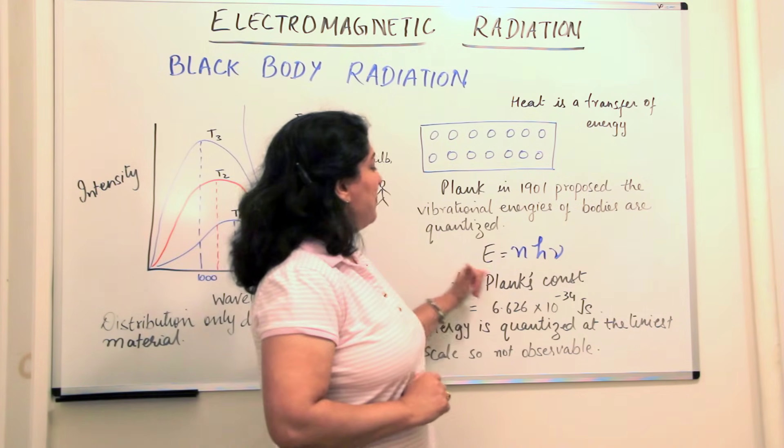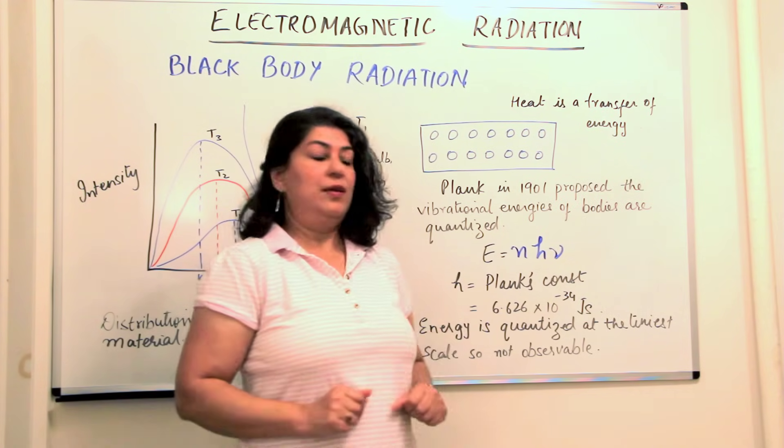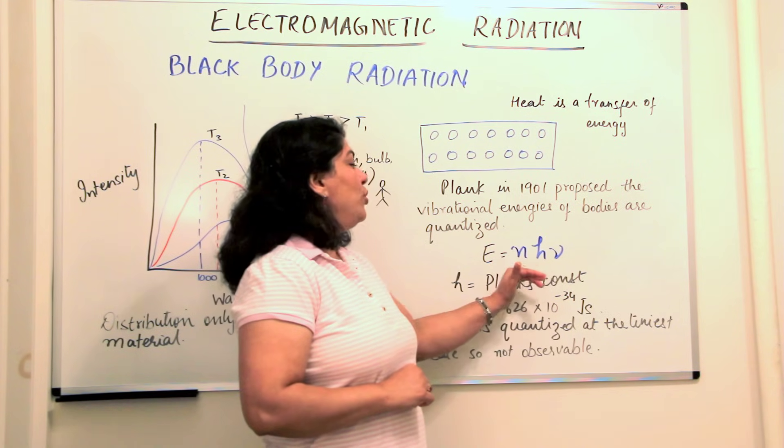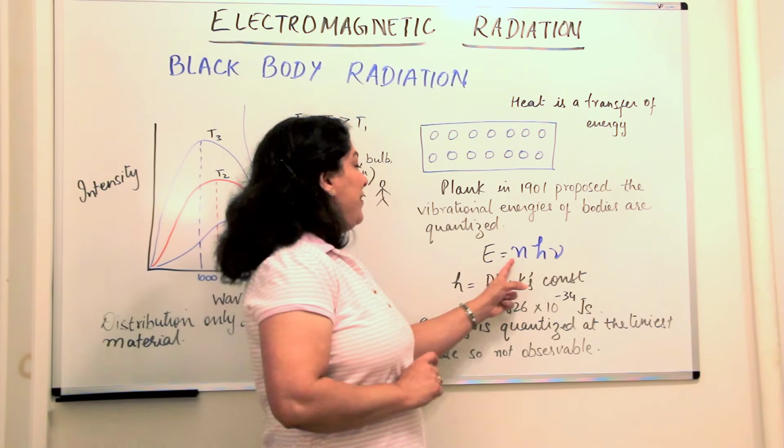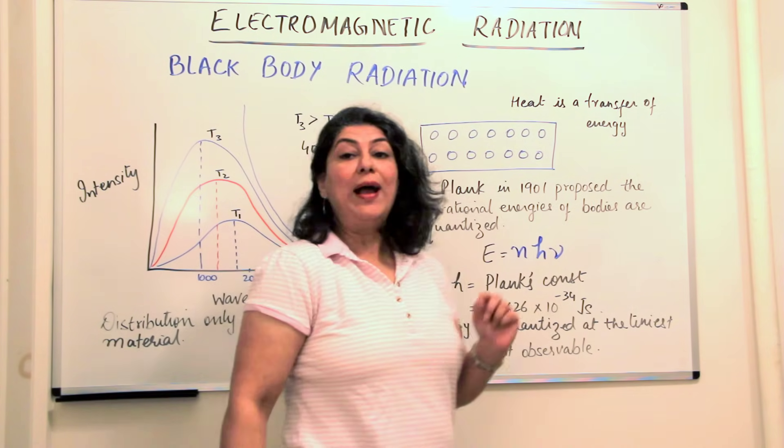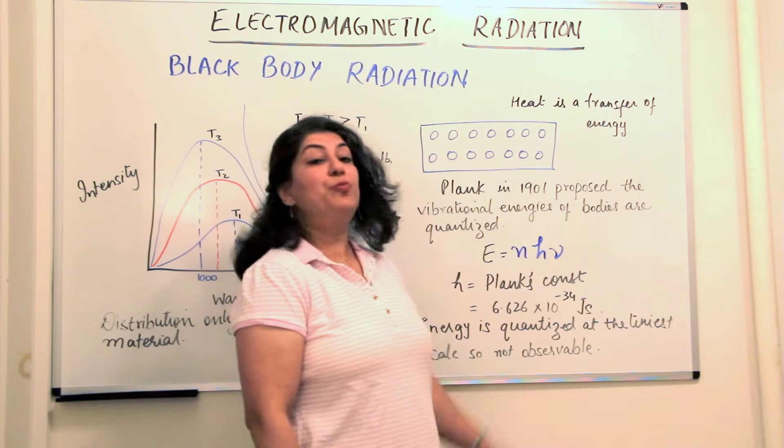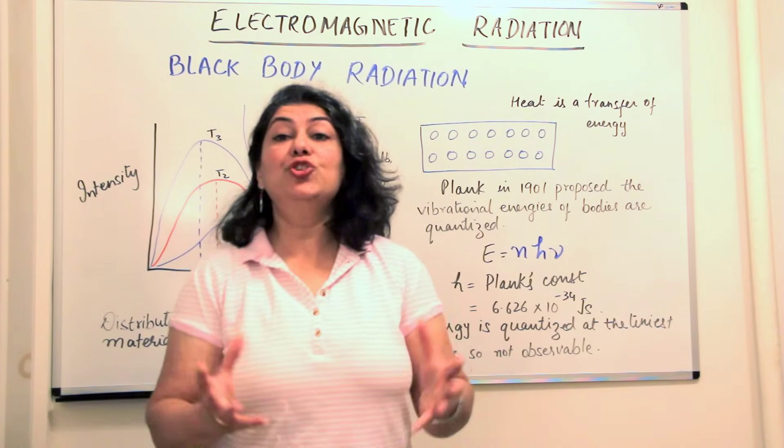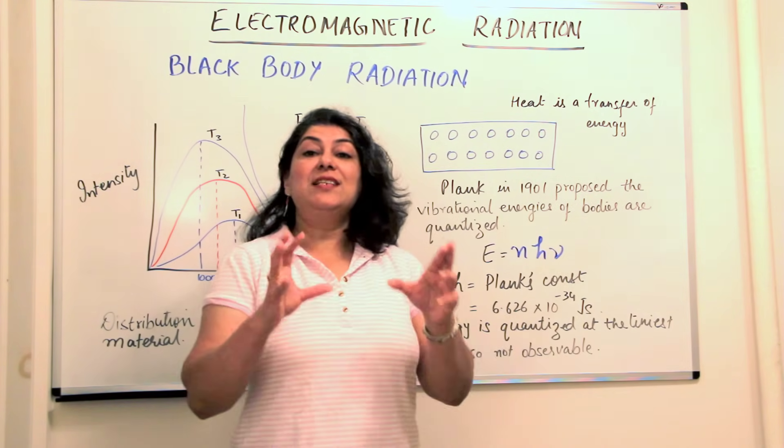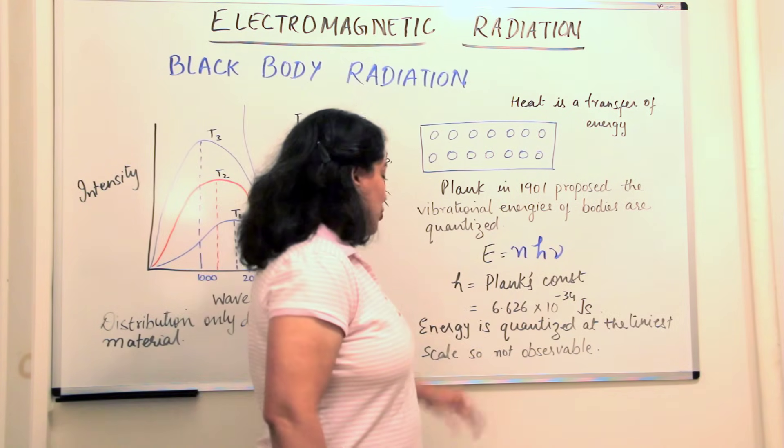He gave a mathematical solution. He said energy of the electromagnetic wave is equal to nhν where n is an integer, h is the Planck's constant and he gave the value of Planck's constant equal to 6.626 × 10^-34 joules second. This is so small that it is absolutely non-observable to us for macroscopic objects.